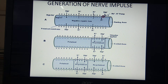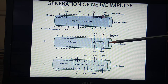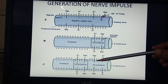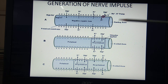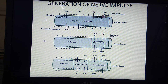So, the meaning of polarization, depolarization, and repolarization: polarization is the resting state, repolarization is when the depolarized state returns to normal level. In this way, generation of nerve impulse and its transmission takes place. For polarization and depolarization, sodium and potassium ions move inside or outside, and for their movements, sodium and potassium pumps are present.